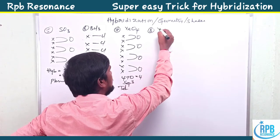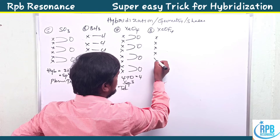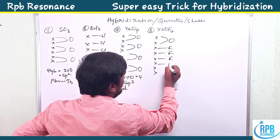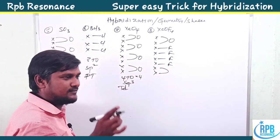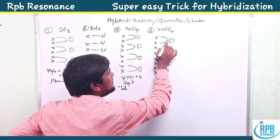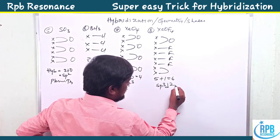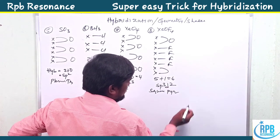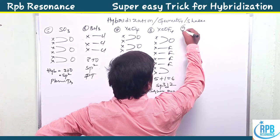For XeOF4, xenon is in group eight. With one oxygen and four fluorines, the remaining two electrons form one lone pair. There are five sigma bonds plus one lone pair: five plus one equals six — sp3d2 hybridization, and the shape is square pyramidal.